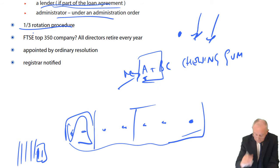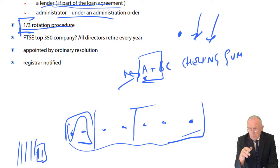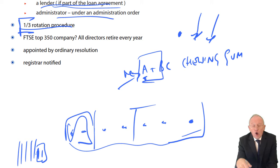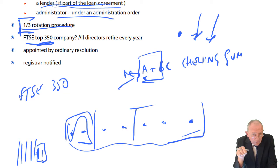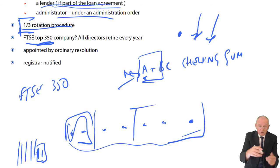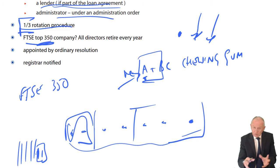The one-third rotation procedure still does apply. But nowadays, under the principles of corporate governance — the Cadbury Report and the United Kingdom Combined Code — for a public company, specifically the FTSE 350 top 350 companies, all directors retire and resign each year and submit themselves for re-election if they choose to. So all directors every year will resign and resubmit for re-election. But it's only for the top 350, so by definition public quoted companies.